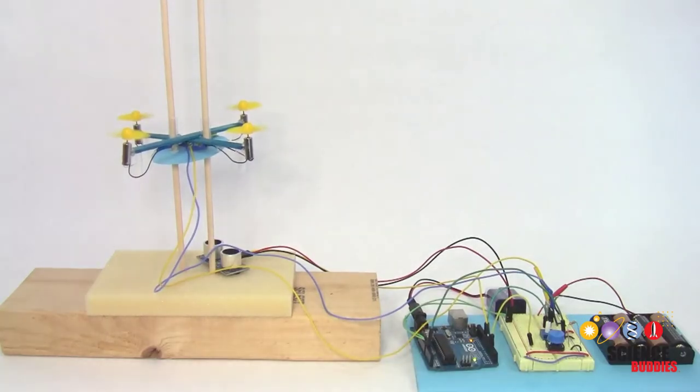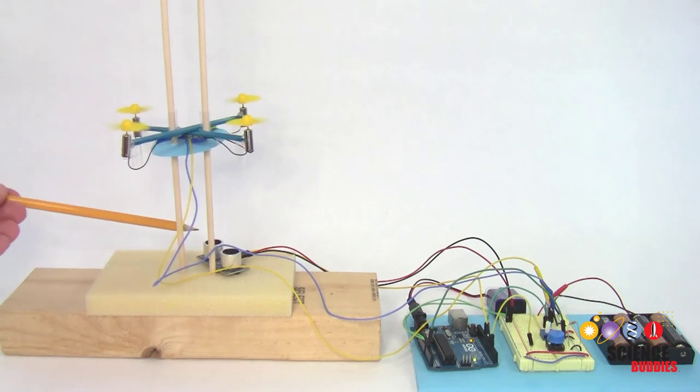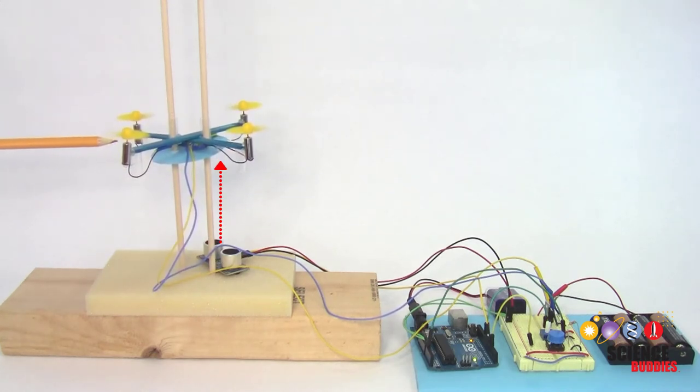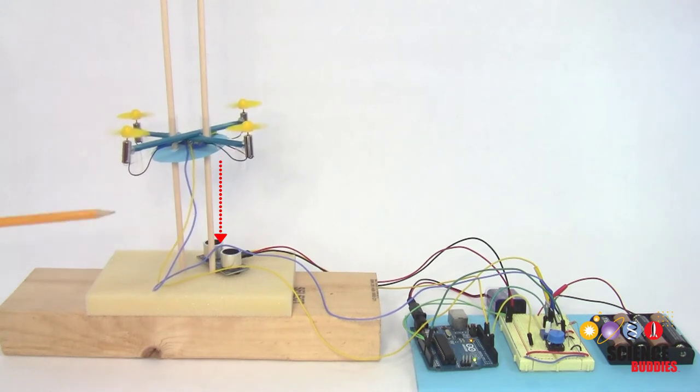In this Arduino project you'll add an ultrasonic distance sensor that measures the drone's height. It does this by sending out bursts of ultrasonic sound and measuring how long they take to reflect back.